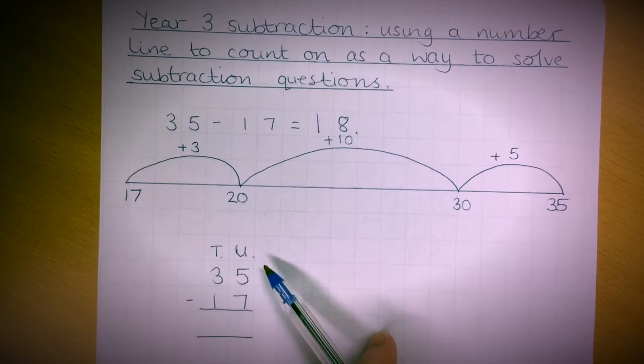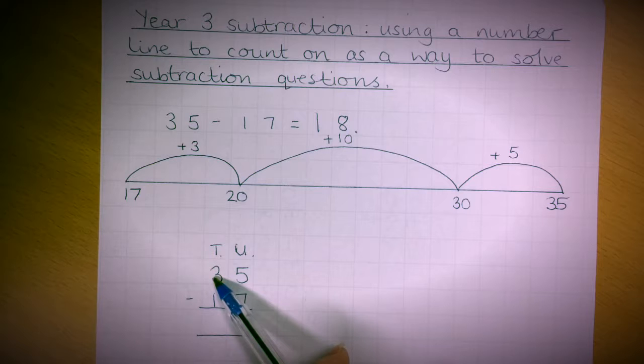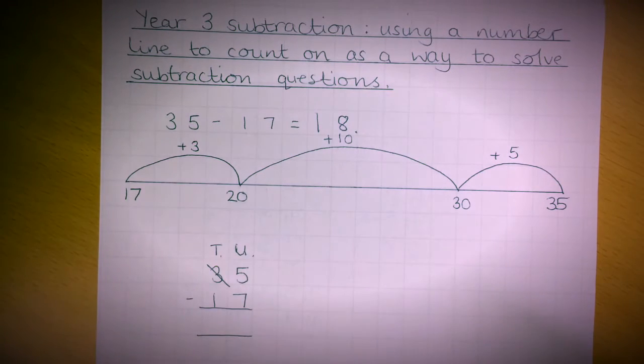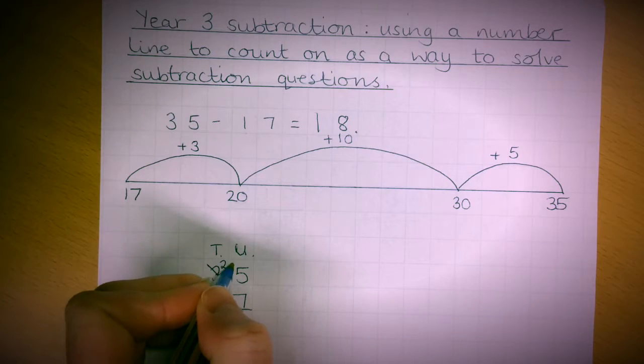We ask ourselves, I have 5 here and I need to take 7 away. Is that possible? No, because 7 is bigger than 5. So we need to go to the tens column for a little bit of borrowing. We're going to reduce the 30 to a 20.